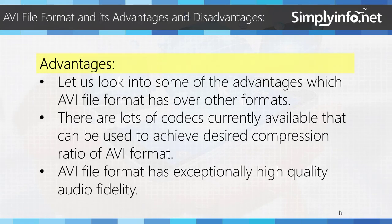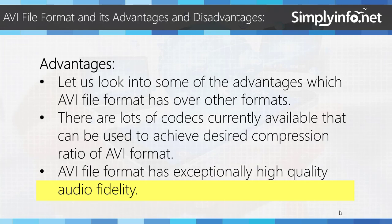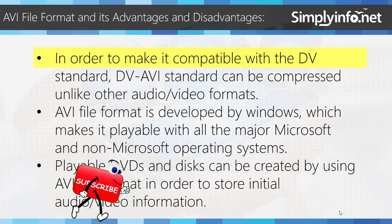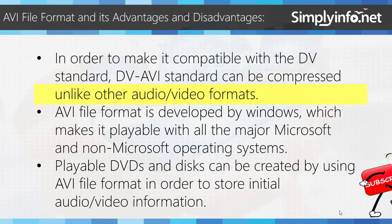Advantages and Disadvantages of AVI file format. Advantages: There are lots of codecs currently available that can be used to achieve the desired compression ratio of AVI format. AVI file format has exponentially high quality audio fidelity. In order to make it compatible with the DV standard, DV AVI can be compressed unlike other audio or video formats.